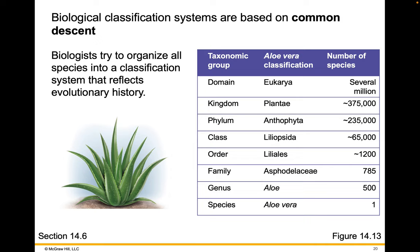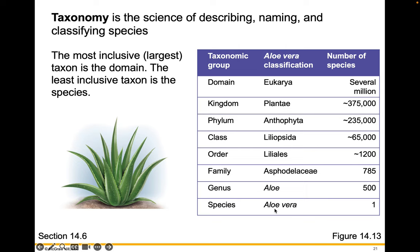Biological classification systems are based on common descent or evolutionary history. Biologists organize all species into a classification system reflecting evolutionary history by breaking things down into taxonomic groups: domain, kingdom, phylum, class, order, family, genus, and species. For example, the aloe vera plant has the scientific name combining genus Aloe and species vera. Taxonomy is the science of describing, naming, and classifying species. The most inclusive taxon is the domain; the least inclusive and most specific is species. As you work down from domain to species, the number of organisms in each category gets smaller.